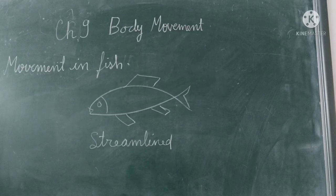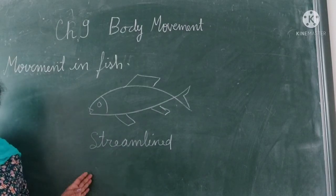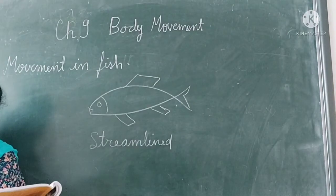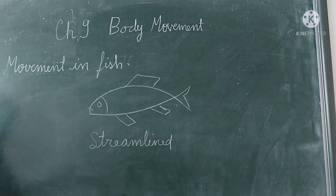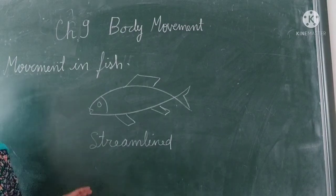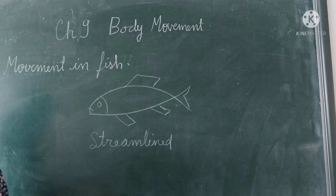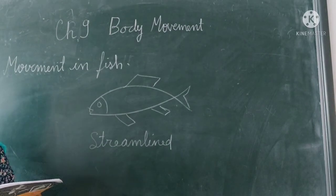Fish also have a structure called a swim bladder, which is filled with air and keeps the fish afloat. It is filled with air, which helps the fish to move quickly in the water. During swimming, the tail is swept from side to side, bending the body to produce a thrust that propels the fish forward.